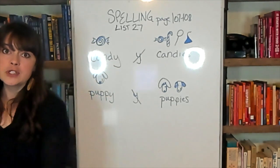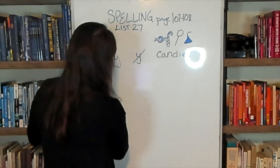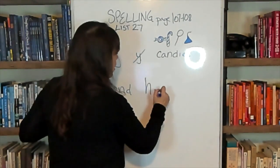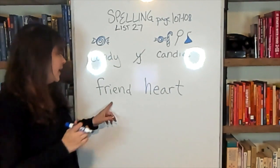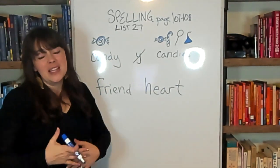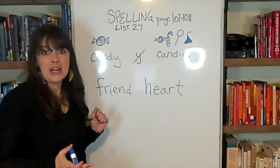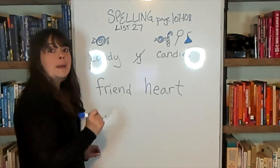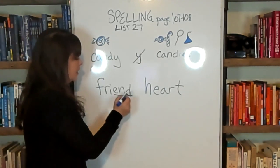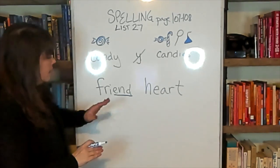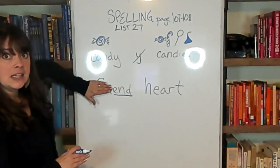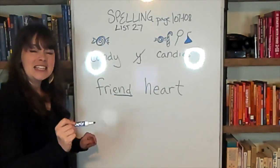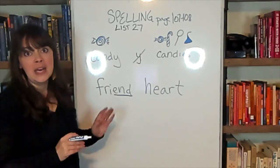Now the other part of this, of your spelling list this week, are some memory words. Friend and heart. Now, friend and heart, they're called memory words because they really don't follow the regular rules, so you just kind of have to memorize them to know how they spell. You can't really sound it out. You have to just know it. This is one way to remember how you spell friend. Right here, E-N-D. What does that spell? End. And if you can remember as you're writing friend, F-R-I-E-N-D, that end comes right at the end of friend. It will help you spell it correctly.